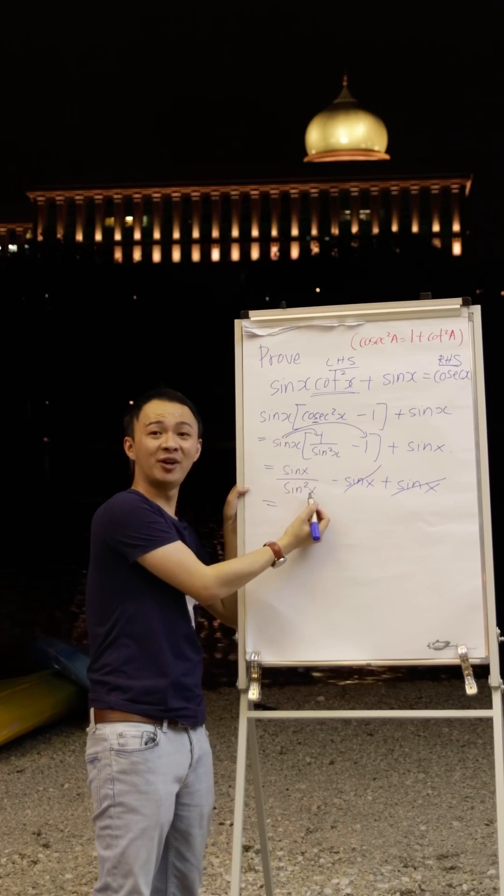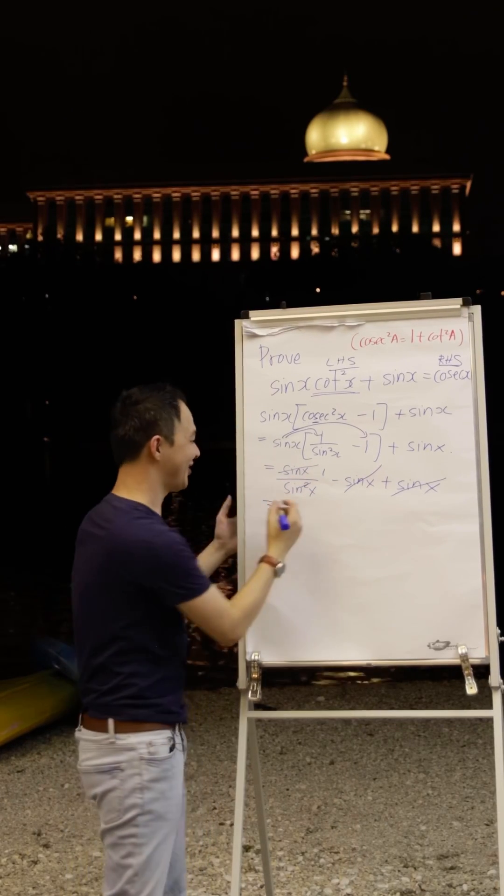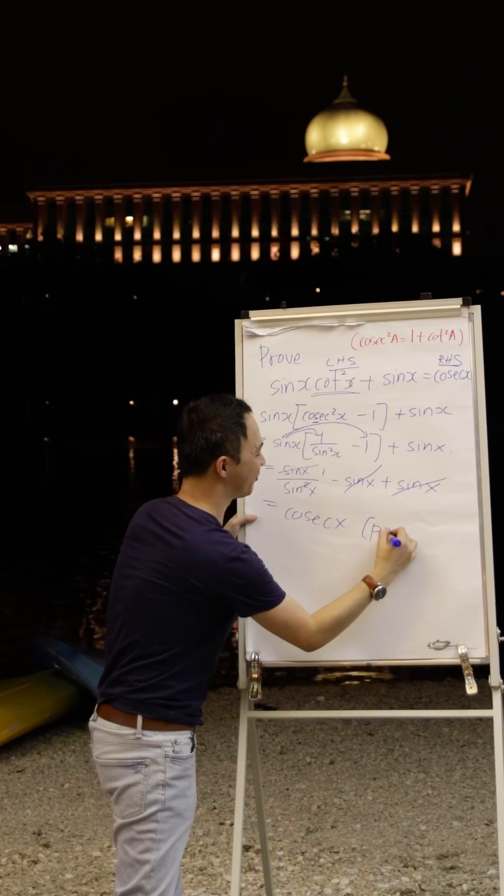Then this one I have double of the sine x, I cancel it out, I get 1 over sine x. What is 1 over sine x? Which is cosecant x. Then I will write proven.